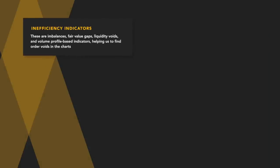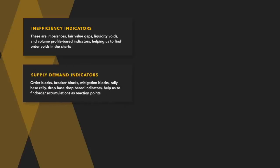What are the indicator categories? First, inefficiency indicators — these are imbalance, fair value gaps, liquidity voids, and volume profile based indicators, helping us to find order voids in the charts. Second, supply and demand indicators — order blocks, breaker blocks, mitigation blocks, rally-based rally, and drop-based indicators, which help us find order accumulations as reaction points.